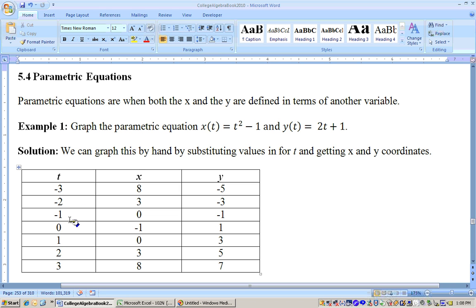What you can do is just put in different values for t. I just put in from negative 3 up to 3 and run them through the x(t) function and run them through the y(t) function, and you get x, y coordinates. Then you plot these x, y coordinates.